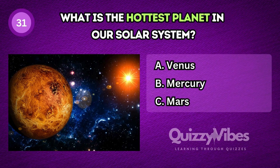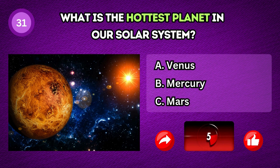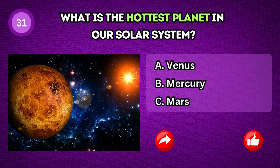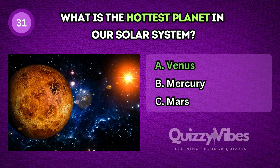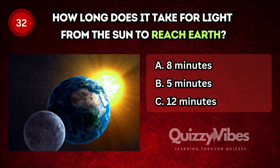What is the hottest planet in our solar system? Answer A, Venus. How long does it take for light from the sun to reach Earth?